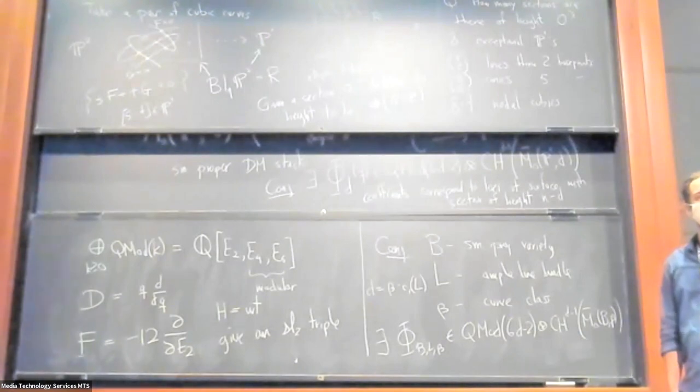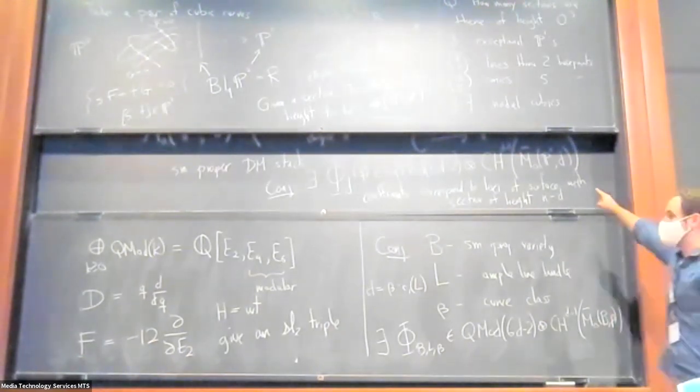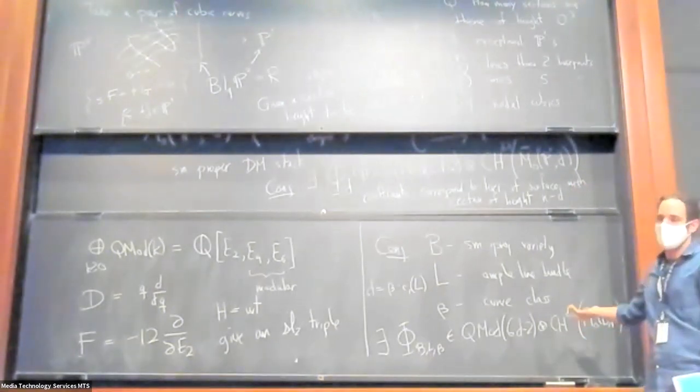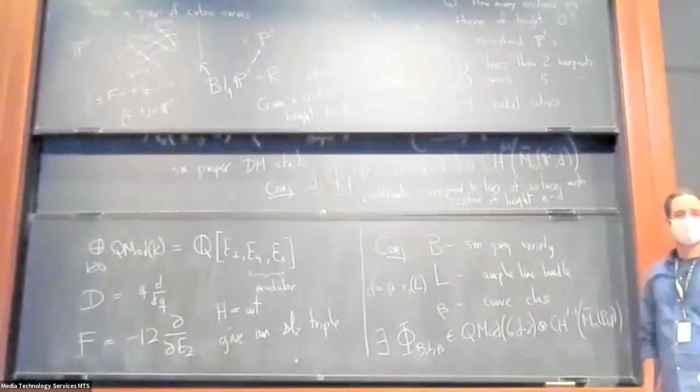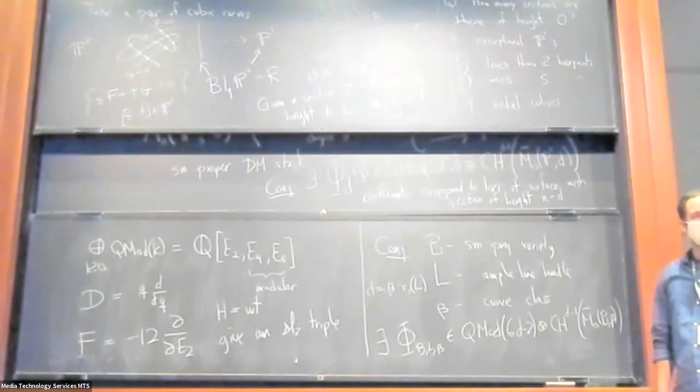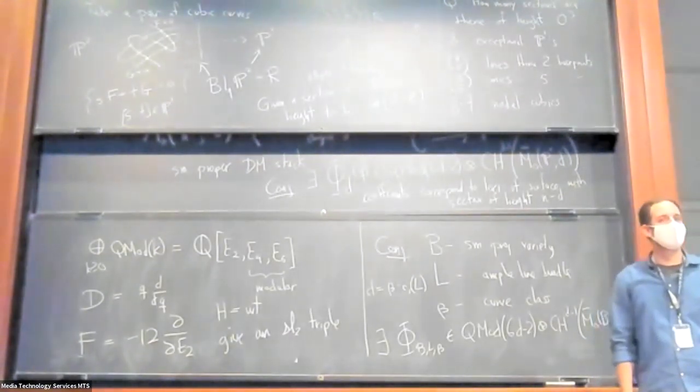You have written Chow groups there. Is it really Chow groups or cohomology, or is it the same? Yeah, so they're actually the same. Well, sorry. So in the case of PR, they're the same. In the case of a general base, these things are all algebraic. So I might as well take it in Chow. Except that it's not going to be much bigger than cohomology.